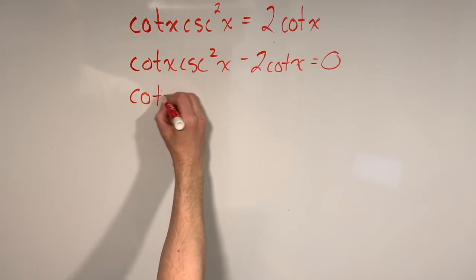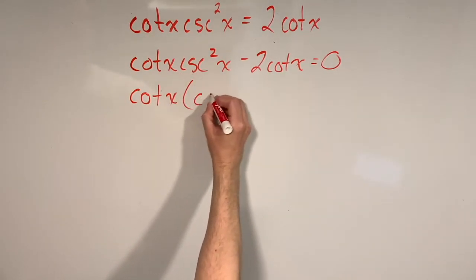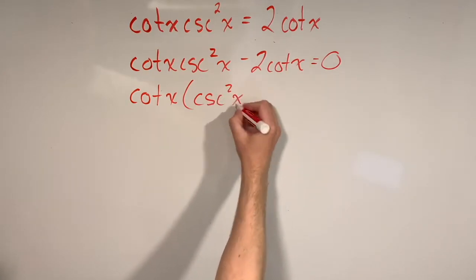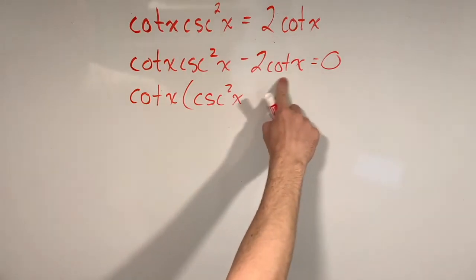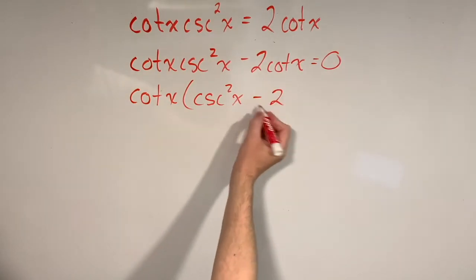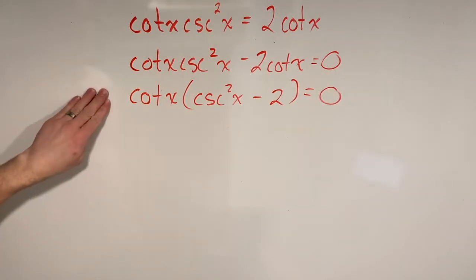We're going to common factor out a cotangent x, and that's going to leave us with just this cosecant squared x, right? I take this term and divide out the cotangent x, so I'm just left with this guy. And if I divide out a cotangent x here, I'm just left with a minus 2. I'm going to close up my brackets and I'm still left equal to zero here.